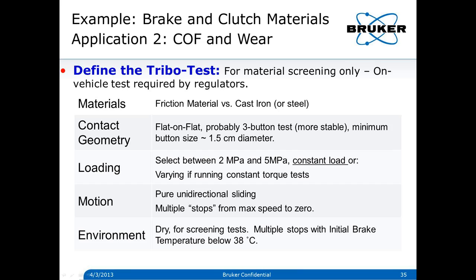I need to know what load to apply assuming a coefficient of friction of something like 0.4 — the automakers are trying to get to 0.5 and stable so they can have smaller, lighter components for better fuel economy. I just need to make sure I've got my load and torque calculated correctly for a 1.5-centimeter diameter button with three buttons at a 2 to 5 megapascal stress.